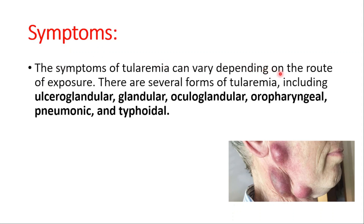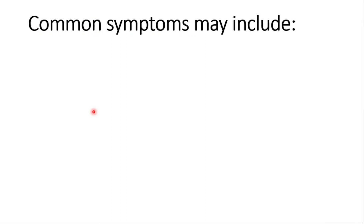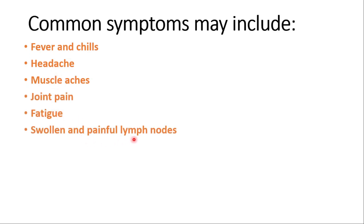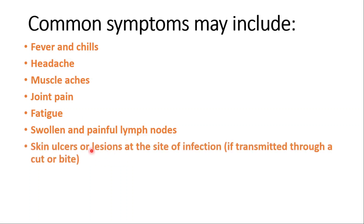The symptoms of tularemia can vary depending on the route of exposure. Here you can see the glandular type of tularemia. There are several forms, including ulceroglandular, glandular, oculoglandular, oropharyngeal, pneumonic, and typhoidal. Common symptoms include fever and chills, headache, muscle aches, joint pain, fatigue, and swollen and painful lymph nodes. Skin ulcers or lesions at the site of infection can also occur if transmitted through a cut or bite.